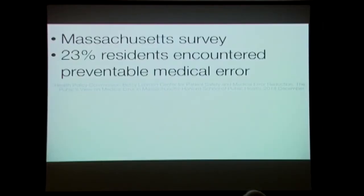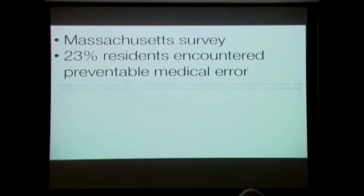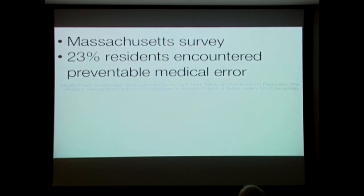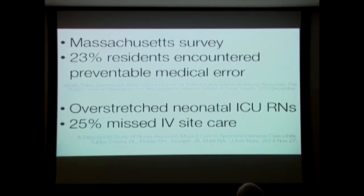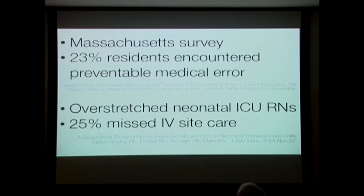This is the reason why we need to be concerned about this. Here are two things that came across my desk just a few months ago. A Massachusetts survey done by the Harvard School of Public Health indicated that a quarter of the residents had encountered preventable medical error. And even more compelling from the Journal of Advanced Nursing are the results of overstretched neonatal ICU nurses. Can you think of a more vulnerable population than neonates in an ICU where sepsis is a catastrophe? Twenty-five percent of them in their last shift missed appropriate IV site care. They knew they had to do it, but they couldn't get to it because they were overwhelmed. This is a system that's waiting for catastrophic outcomes.